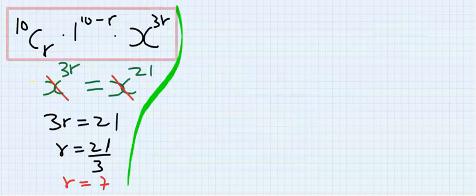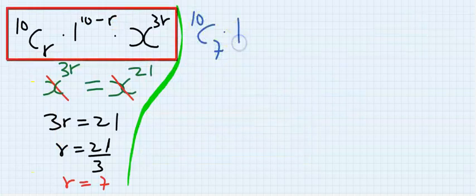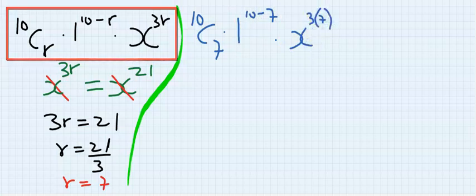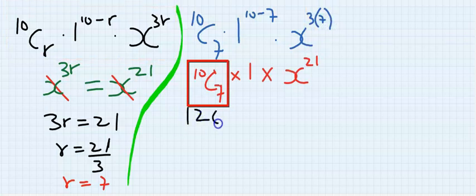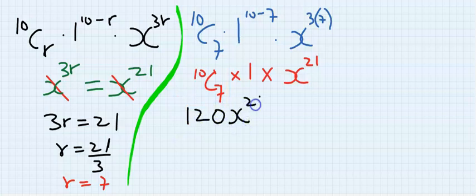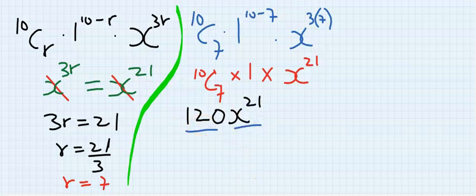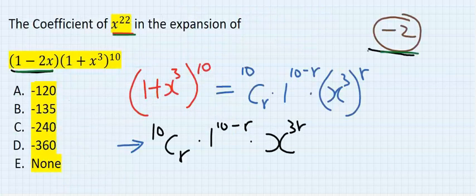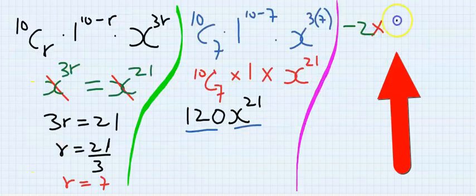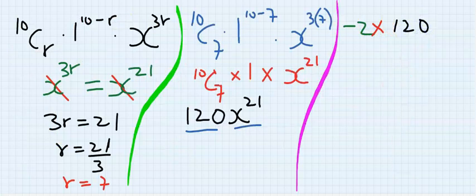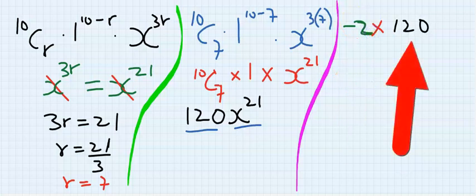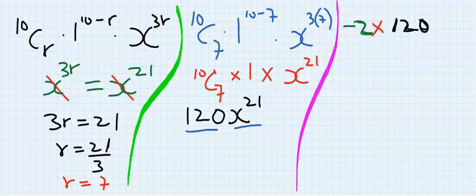Substitute the value of r equals 7 into the expression: 10 combination 7 times 1 to the power of 10 minus 7 times x to the power of 3 times 7. So 10 combination 7 is 120, times 1, times x to the power of 21. This is the coefficient in x to the power of 21. But since the question asks for x to the power of 22, I bring back the minus 2 and multiply it with 120, giving a final answer of minus 240, which is option C.